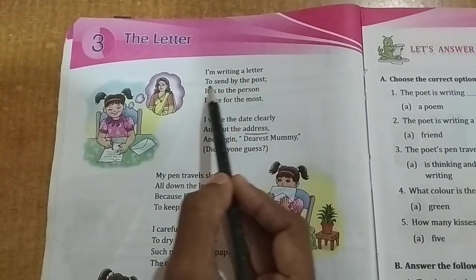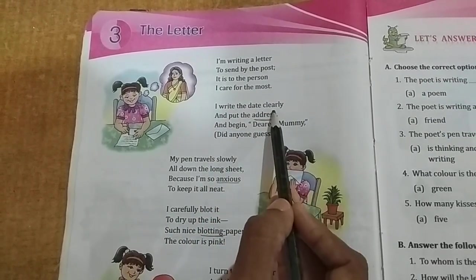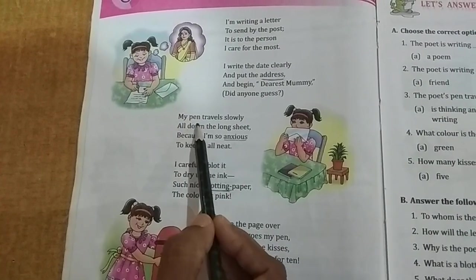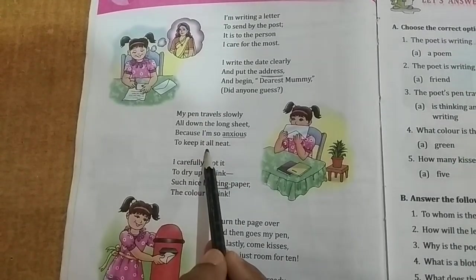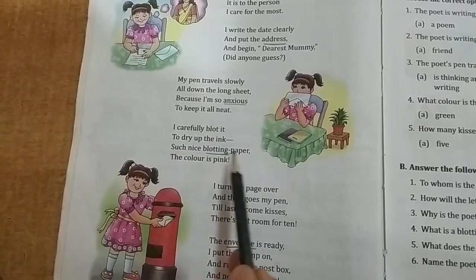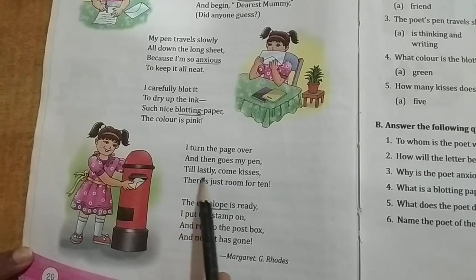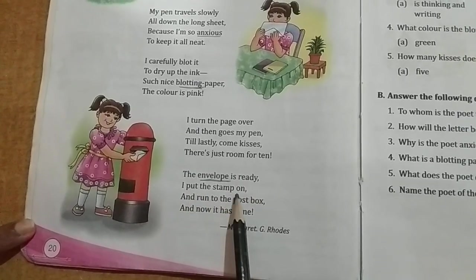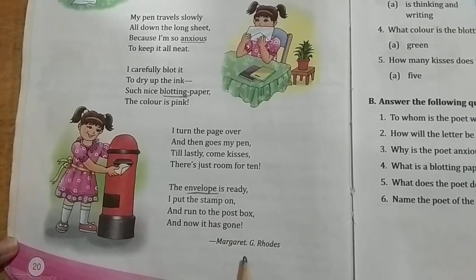I am writing a letter to send it by the post. It is to the person I care for the most. I write the date clearly and put the address and begin, Dearest Mummy — did anyone guess? My pen travels slowly all down the long sheet because I am so anxious to keep it all neat. I carefully blot it to dry up the ink. Such nice blotting paper, the colour is pink. I turn the page over and then goes my pen. Till lastly, come kisses, there is just room for ten. The envelope is ready. I put the stamp on and run to the post box. And now it has gone. Written by Margaret G. Rhodes.